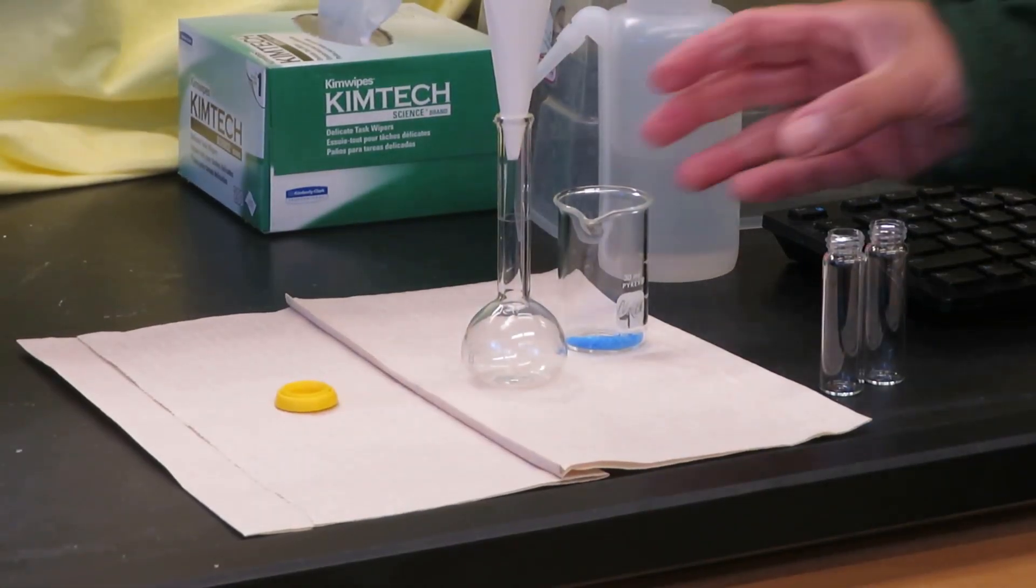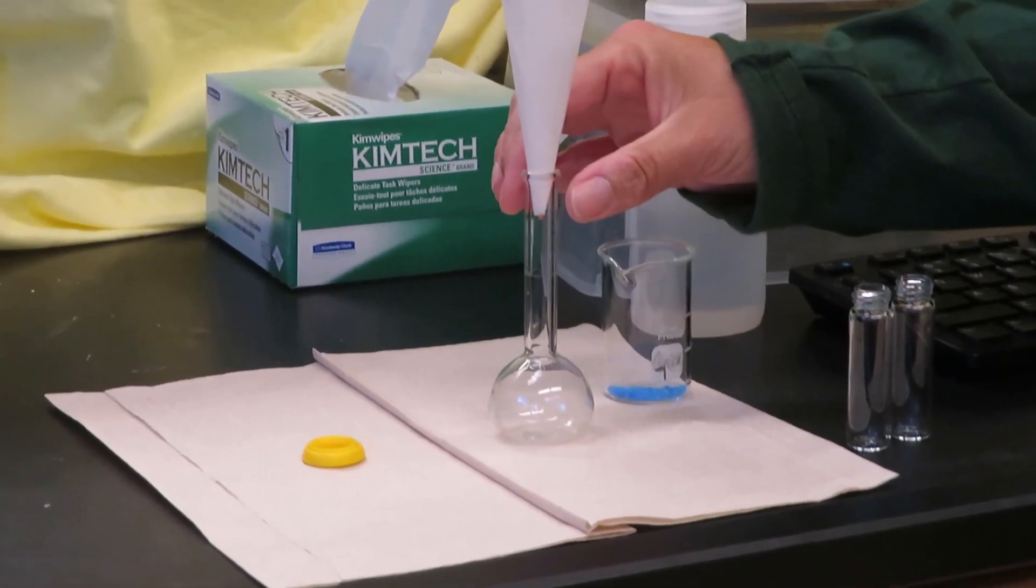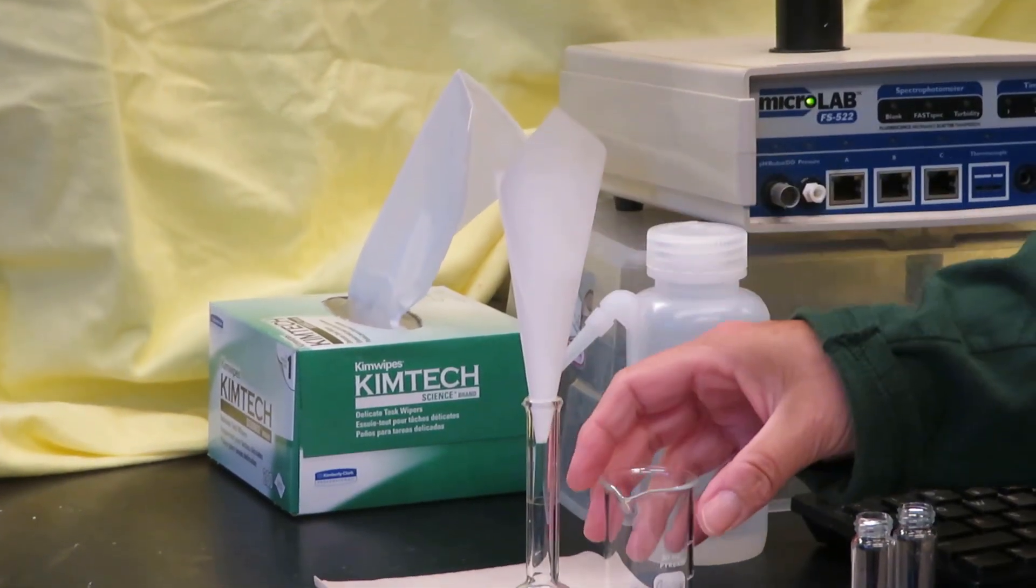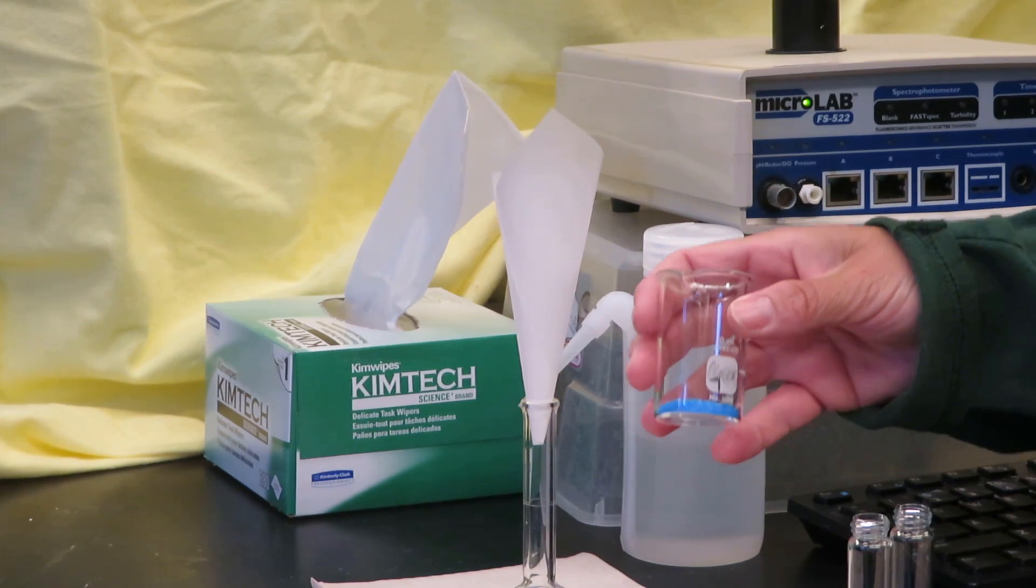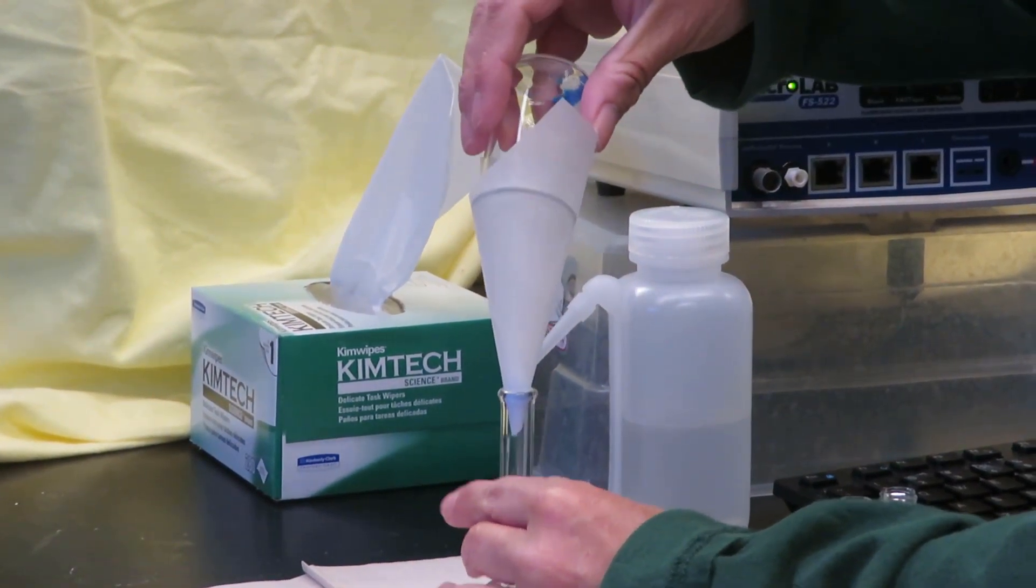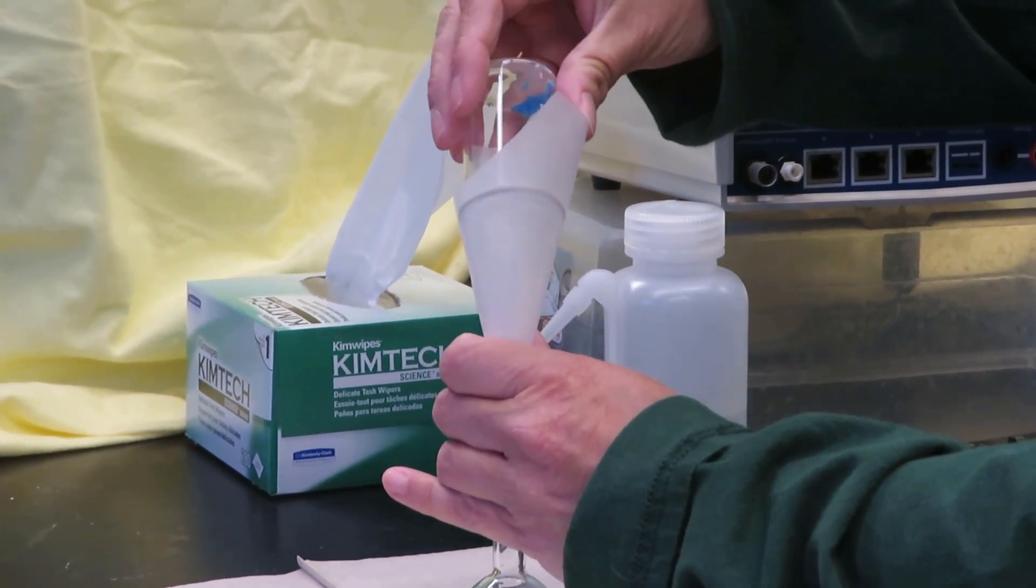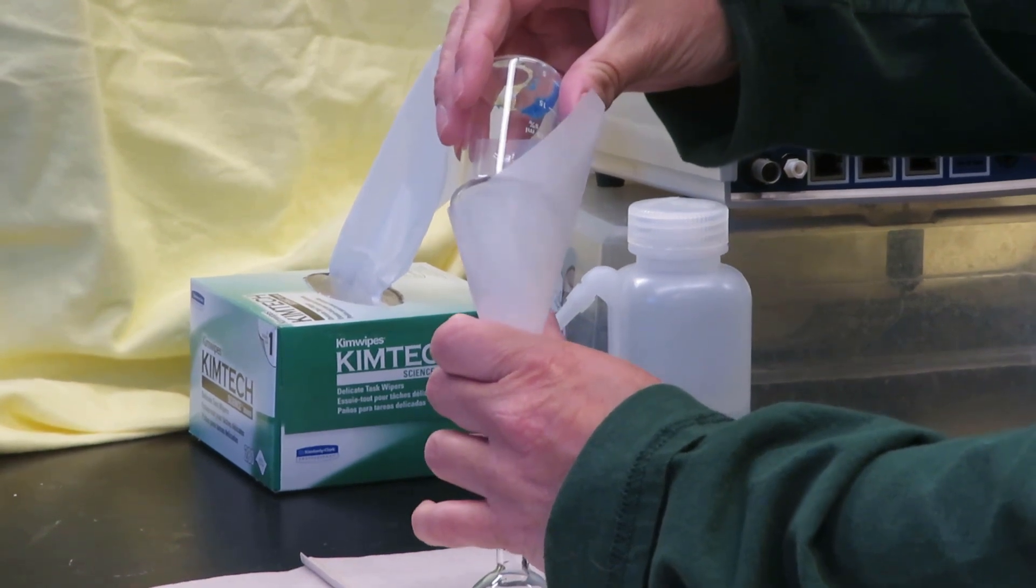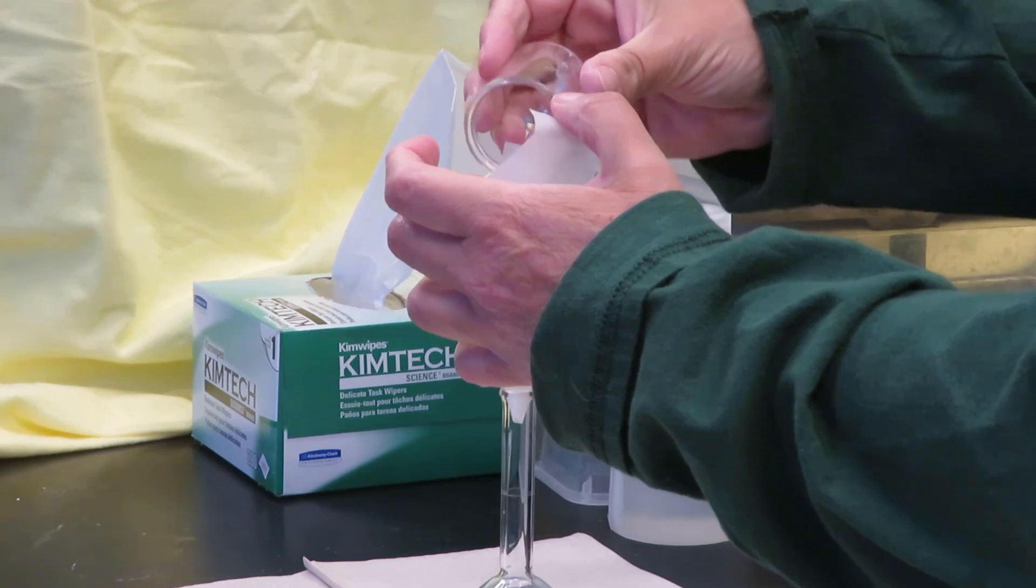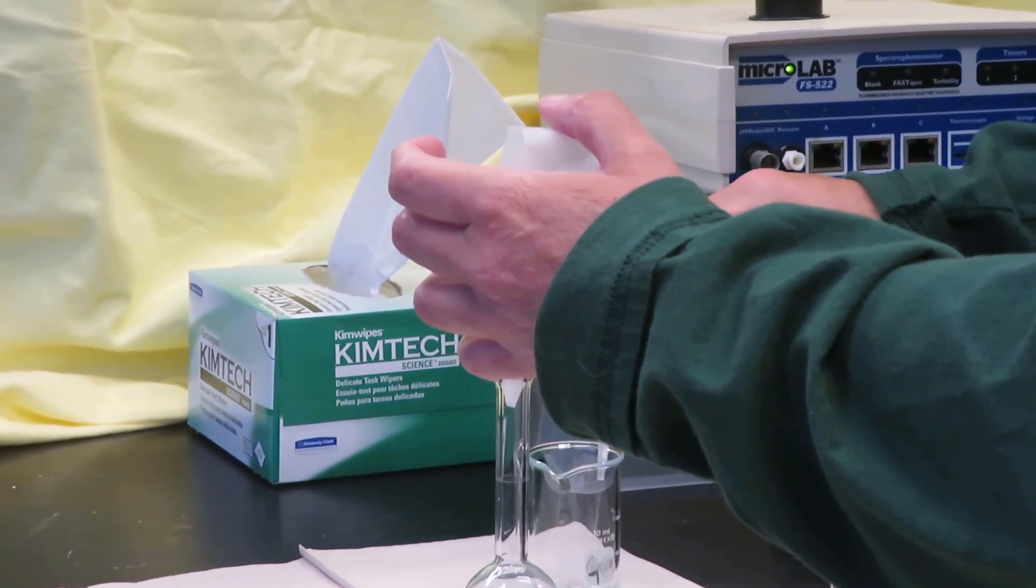Now I need to transfer the solid that I weighed into the 25 milliliter volumetric flask. I've made a funnel to help with the transfer, so it doesn't spill all over the place. I'm going to pour it in. There will be some left in the beaker and the funnel. I want to make sure that I transfer all of it.